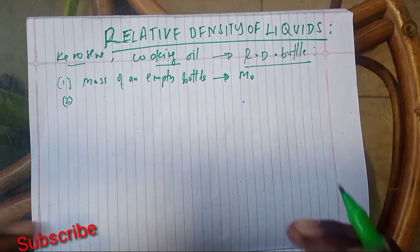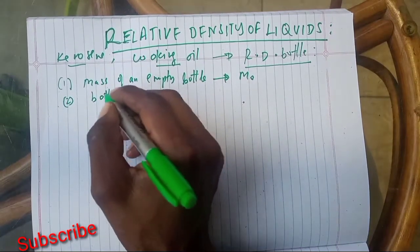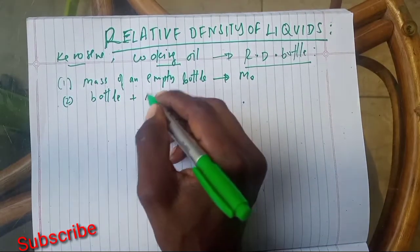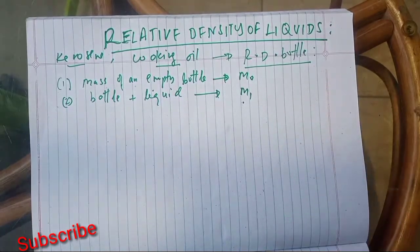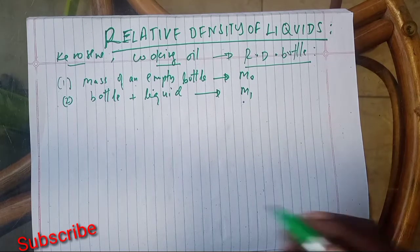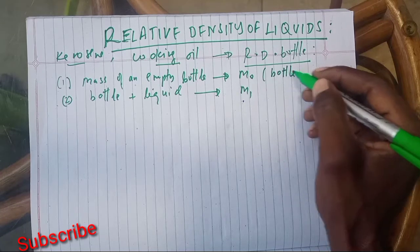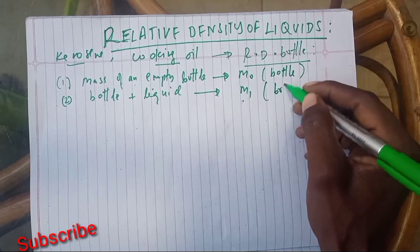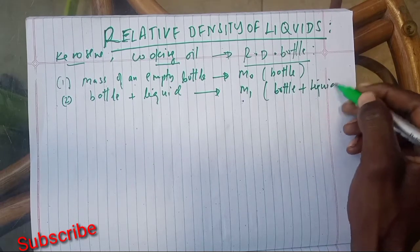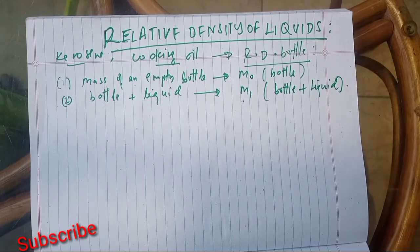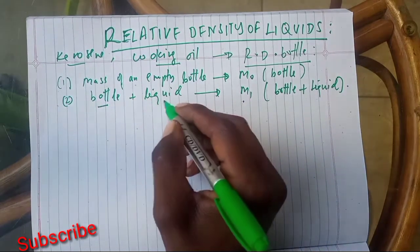So the first mass, M0, is the mass of the bottle only. The second mass, M1, is the mass of the bottle plus the liquid. That difference is what allows you to determine the relative density.